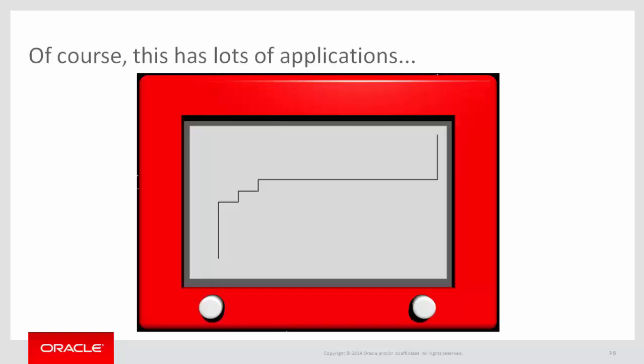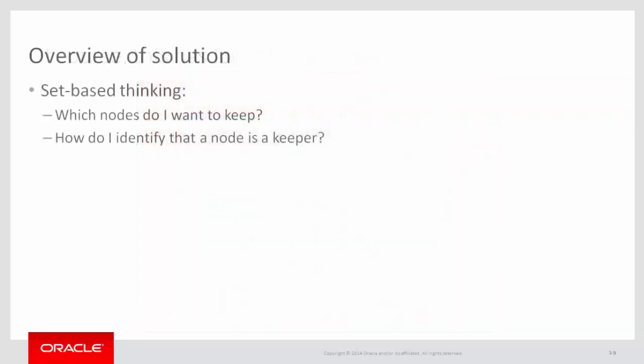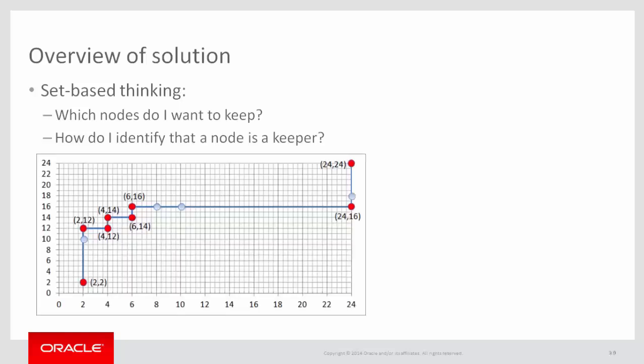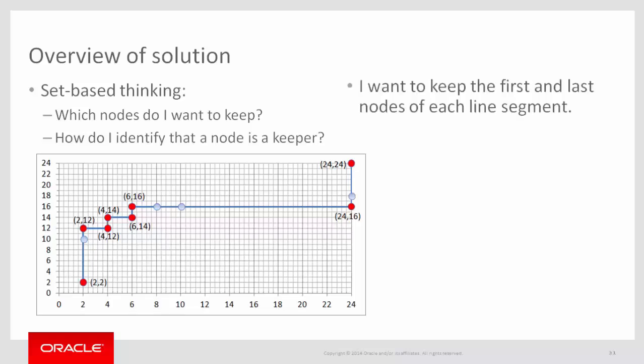Now let's go to an overview of the solution. Since we're using SQL, I want to use set-based thinking. Instead of consuming the nodes one node at a time, let's look at the whole set of nodes and say: which nodes do I want to keep? And how do I identify that a node is a keeper? Going back to my example, in red I've got the nodes I want to keep — it's pretty obvious that I want to keep the first and last nodes of each line segment.